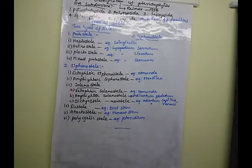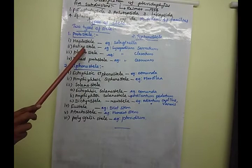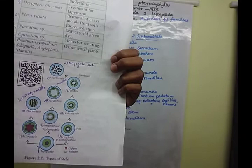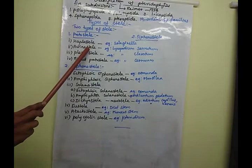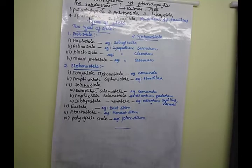The next sub-type is actinostele. In actinostele, there is a star-shaped xylem surrounded by phloem elements. This type of stele is called actinostele. A good example of actinostele is Lycopodium serratum.